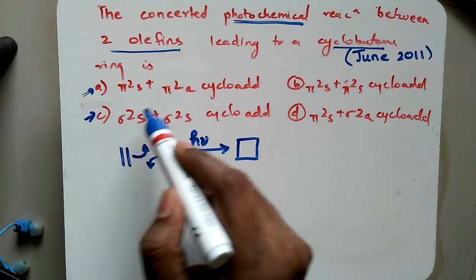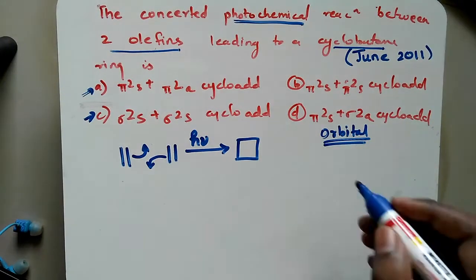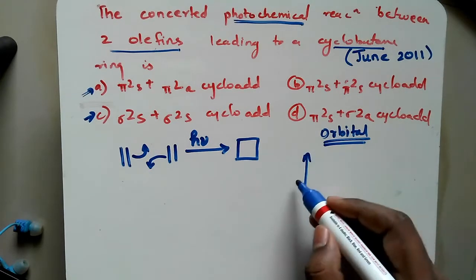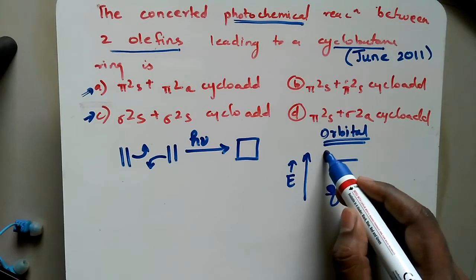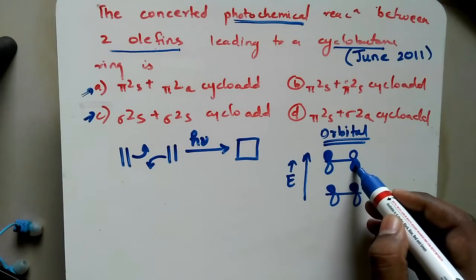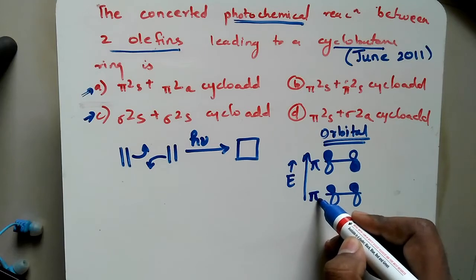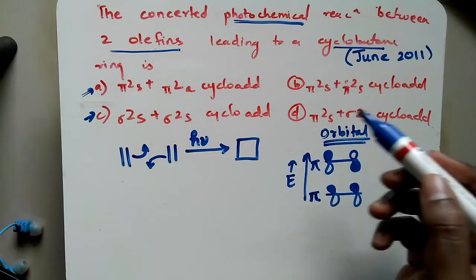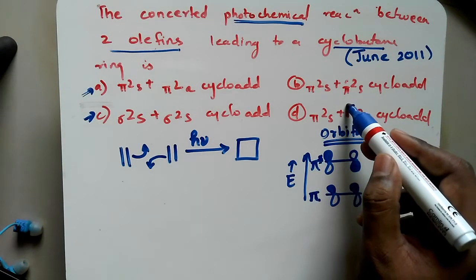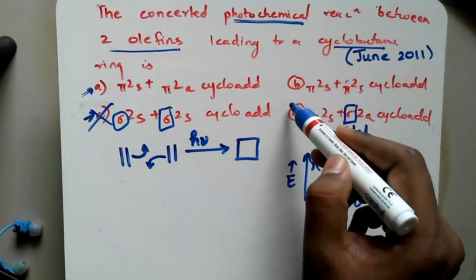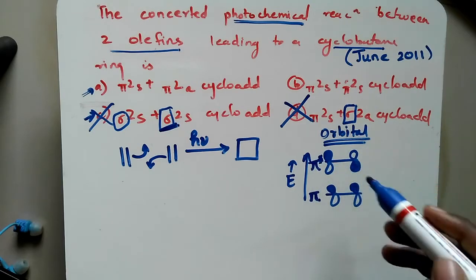Now, which option is correct? We need to consider the orbital diagram for ethene. For ethene we have only two energy levels: both phases on top for the lower orbital, and one phase on top with the other phase down for the next orbital. These are called pi orbitals — only for ethene they are pi orbitals. For 1,3-butadiene or 1,3,5-hexatriene they are sigma. So options C and D are cancelled out because they have sigma orbitals, which ethene does not.